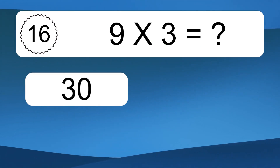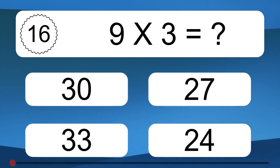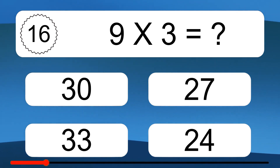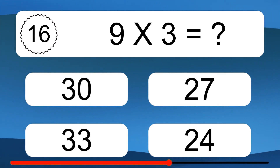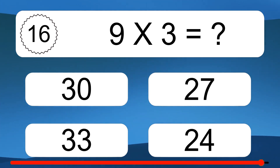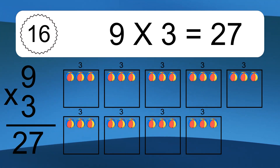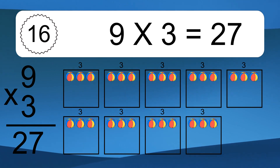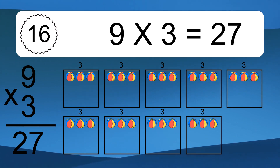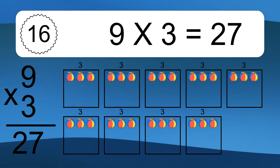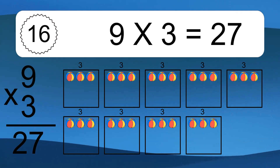9 times 3 equals what? 9 times 3 equals 27. We have 9 boxes, and each box has 3 colorful balls inside. If you count all the balls in all the boxes together, you will have 9 times 3 balls. This equals 27 balls.